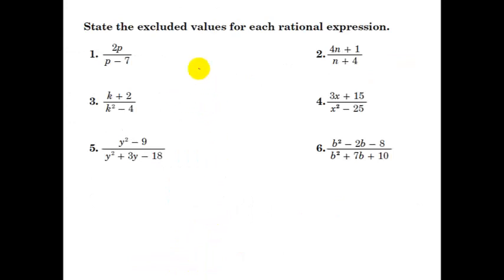All right, let's do some examples. State the excluded values. Again, very easy to state the excluded values, so you're just looking where the denominator is zero. So for this one, p cannot equal 7.